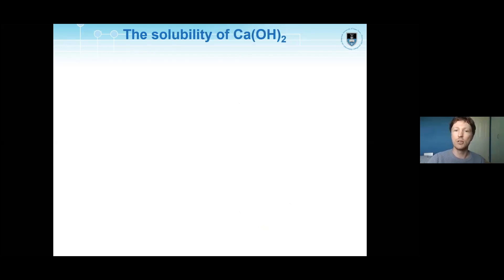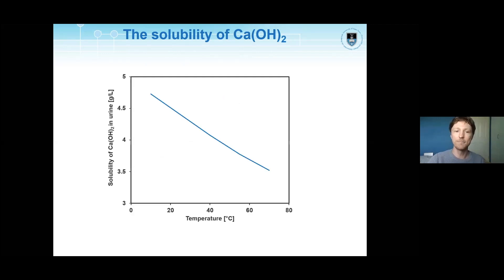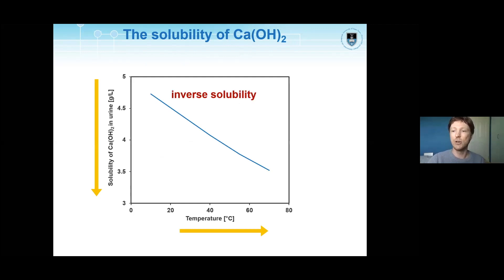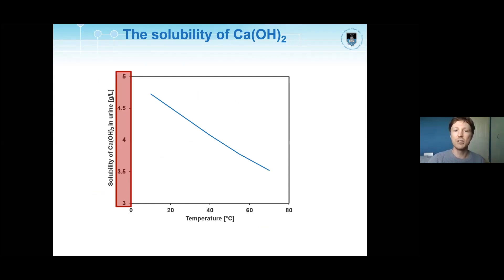But when we look at the solubility of calcium hydroxide, we see something different. As we increase the temperature, the solubility of calcium hydroxide decreases — it is said to have an inverse solubility. We also notice that the amount needed to create a saturated solution is far less than that for sugar.